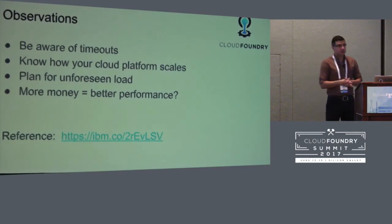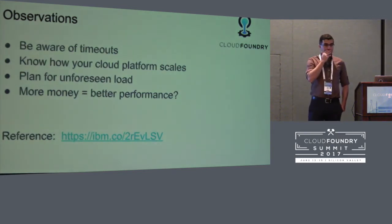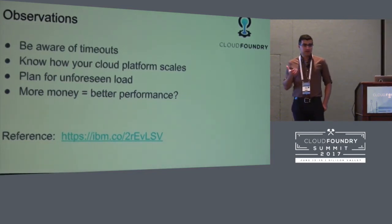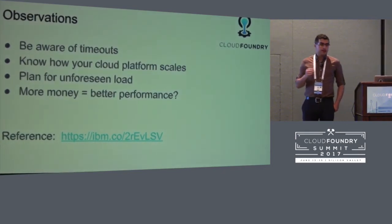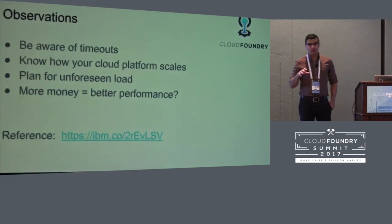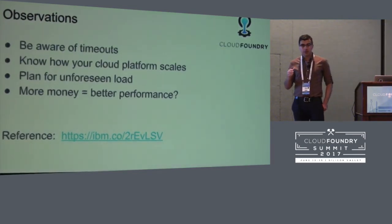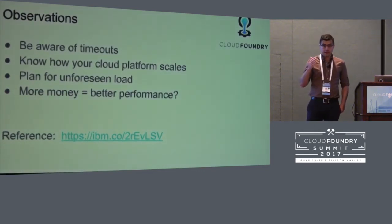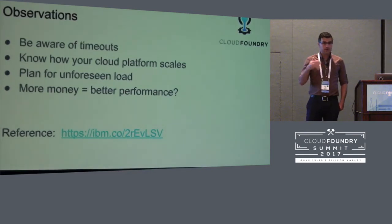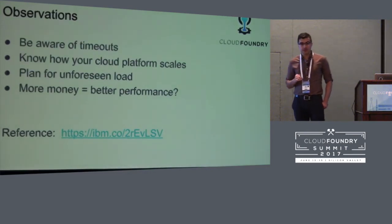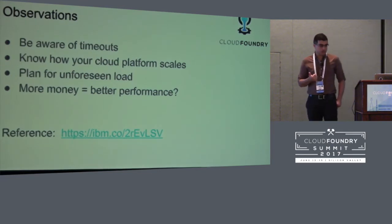The increase in response time wasn't significant, which was quite interesting. It basically means those platforms were able to better identify heavier load and create new containers to provide more resources as requests increased. One of the interesting observations was timeouts. These platforms generally claim the default timeout for functions is 30 seconds, but you can change it up to five minutes. Interestingly, these timeouts are only applicable if you launch requests from within the cloud environment. If you're using Lambda and make calls from outside the VPC, the timeout is always 30 seconds and it kills your function if it takes longer.